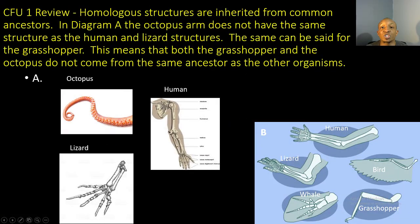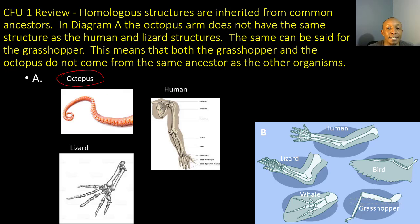Let's take a look at the first check for understanding. Homologous structures are inherited from common ancestors. In diagram A, the octopus arm does not have the same structure as the human and lizard structures. The octopus arm is not similar to the structure of the human and the lizard. Similarly, the grasshopper does not come from the same ancestor as the other organisms.